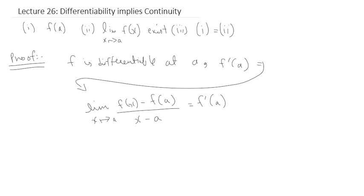We've talked about this definition previously using q approaching a, but it doesn't really matter because it's an arbitrary value getting closer and closer to a. It could be q or x, but x is more standard since we've dealt with x as a variable when calculating limits. So getting back to the point, this limit represents f'(a). Is there any way to re-iterate this and see what happens?